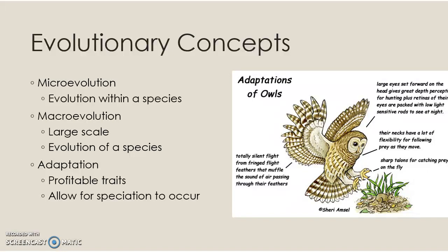Macroevolution is on a much larger scale — it is the evolution of a new species. That's macro, it's big. Macroevolution is what most people think about when they think of evolution, but microevolution is still evolution — it's still allele frequencies that are changing.